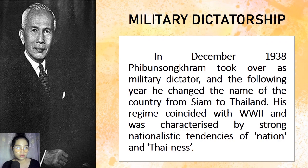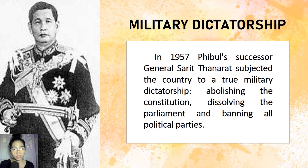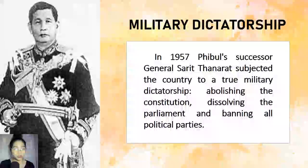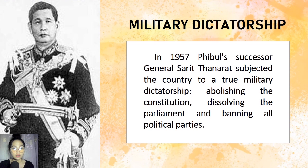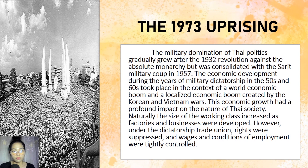During 1957, Phibun's successor, General Sarit Thanarat, subjected the country to a true military dictatorship. He abolished the constitution, dissolved the parliament, and banned all political parties. Half a million people protested around the Democracy Monument on October 14, 1973.